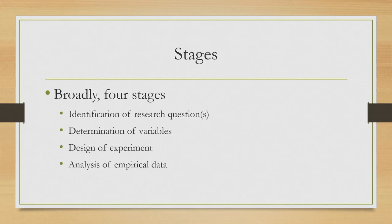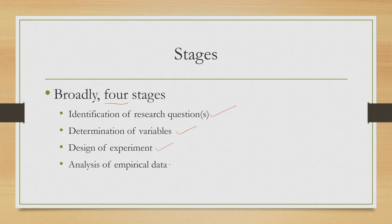What are the stages for empirical research? Broadly there are four stages. First is identification of research questions. Second is determination of variables. Third is design of experiment. And the fourth and final stage is analysis of empirical data. Together these four stages constitute the overall empirical research method. We are going to learn about each of these stages in detail with examples.